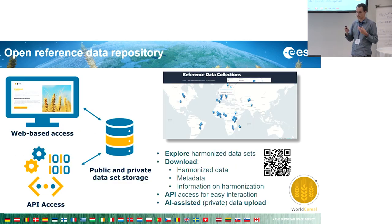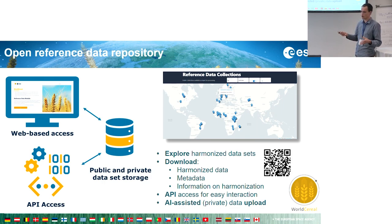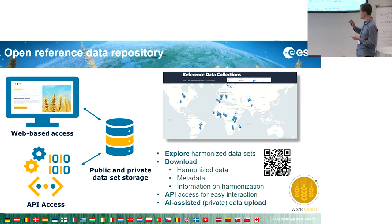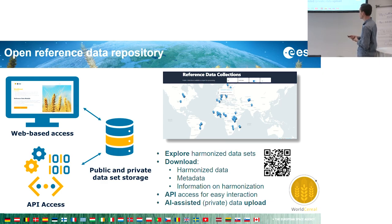There are two ways to tackle this. One is to make it easier to collect and share reference data on crop type information. We've built an open reference data repository which is now publicly available. It has web-based access and an API to explore and harmonize data sets — harmonized to a common data legend. You can download the data and use the API. Recently we also launched an AI-assisted data upload tool that helps you contribute your own data, handling harmonization from your local language to the World Serial harmonized legend automatically.